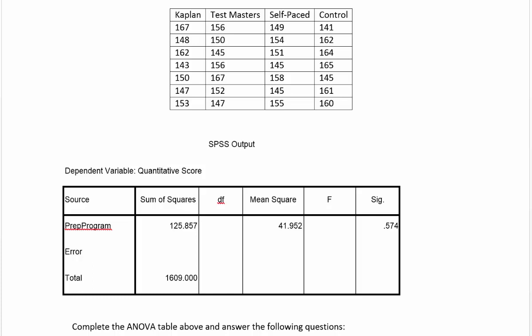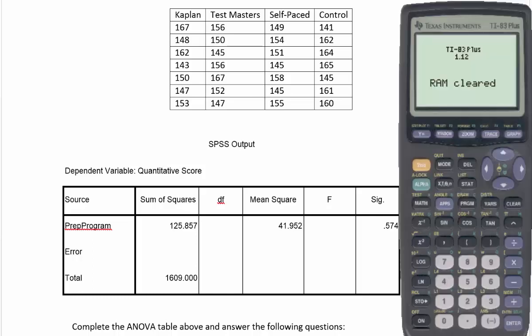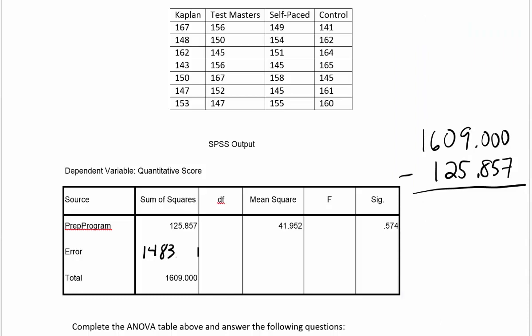Let's start filling in the table by recognizing that the total sum of squares consists of the sum of squares for treatments plus the sum of squares for error. These two add up to 1609. That means we should be able to do 1609.000 minus 125.857 to determine the error sum of squares. When you calculate that, you get 1483.143. That is the value in the error position.